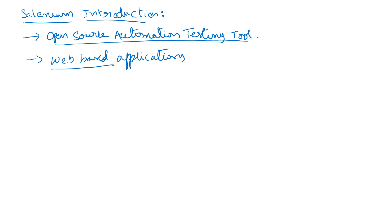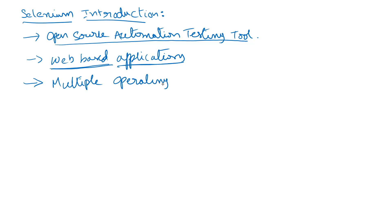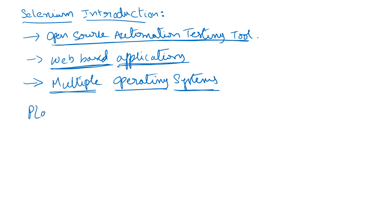Selenium is used only for web-based applications — we cannot use Selenium for Windows-based applications or mainframe applications. We can use Selenium only for web-based applications, and you can work on multiple operating systems using Selenium. What are the different platforms supported by Selenium?